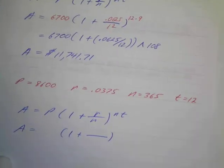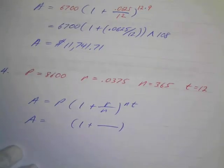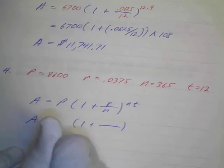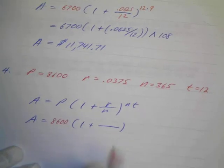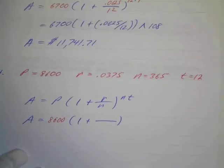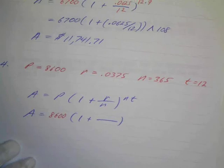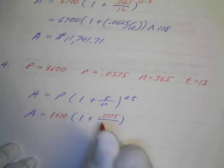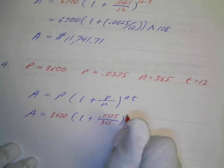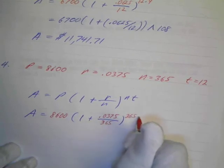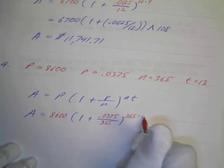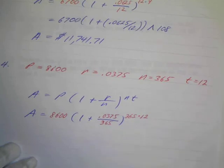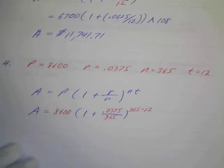Okay. And the time will be 12 years. Okay. So we've got a bit going on there. So let's take a look at this. So we'll just put our data in. So I've got 8,600. And I've got 0.0375. And my n is going to be 365. And then I've got another 365 here. Times 12. So 12 times 365. I won't be able to do that in my head. I'd have to multiply that out.